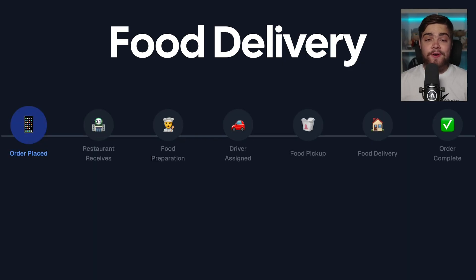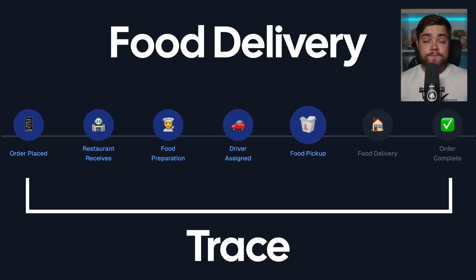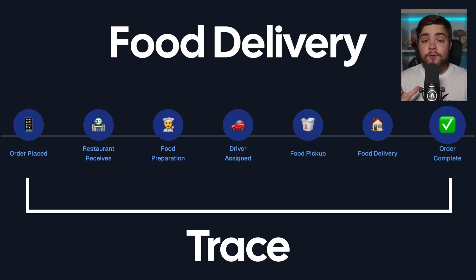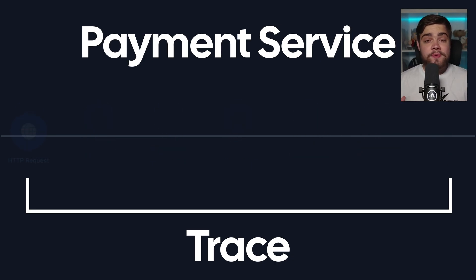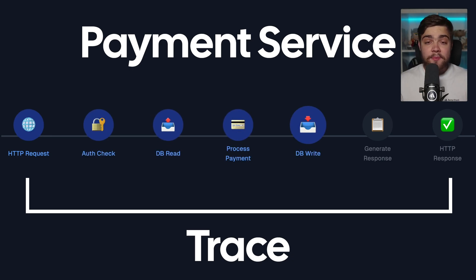Think of ordering food from your favorite food delivery app. From the moment you click order until the food arrives at your door, that entire journey is like a trace — the complete story of your order from start to finish. A trace is exactly that in your application: the entire journey of a request from the moment it hits your system until you send back a response, traveling through multiple services like databases and external APIs, all part of one single trace.